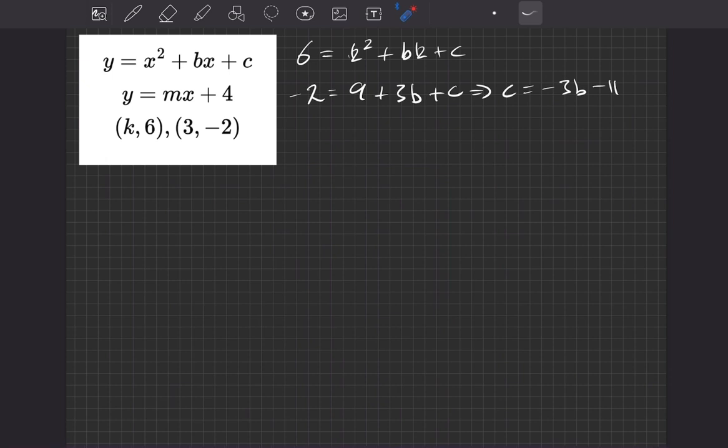So now we'll do the same process with this linear equation. We'll start with the first point with the k and the 6. So what do we get? Well, we get that 6 is equal to m times x, so it's m times k, plus 4.